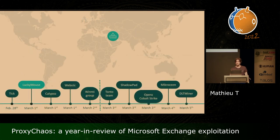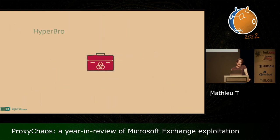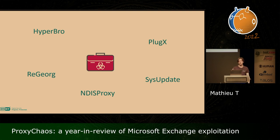One day after TICK, on March 1st, Lucky Mouse joined the party, and they started to exploit the vulnerability by compromising the email server of a governmental entity in the Middle East. Lucky Mouse is also known as APT27 or Emissary Panda. This is an APT group with quite good technical capabilities. They are known for targeting government organizations in the Middle East, Central Asia, and East Asia, and they have also compromised the Civil Aviation Organization in Canada. Lucky Mouse has a set of custom implants: they use their Hyperbro backdoor, Sysupdate backdoor, plugins, and they also have their own rootkit called NDIS proxy, and they like to use the ReGeorg web shell.